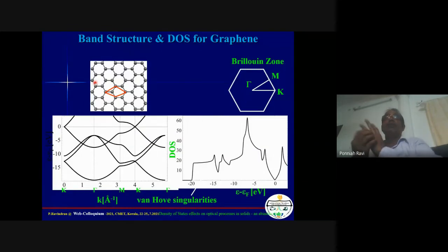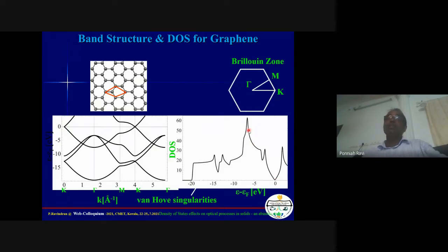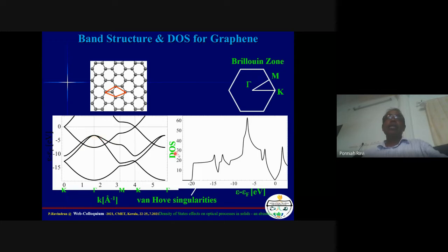Graphene is one monolayer of carbon atoms from graphite. Its band structure shows zero band gap — it is a semi-metal. The DOS shows no gap at the Fermi level. There are some peaks called Van Hove singularities originating from flat bands in the system around 5–6 eV range, where several degenerate bands contribute to a large number of electron states at those particular energies. More electron states means more optical excitation possible at that energy, contributing to higher optical absorption.